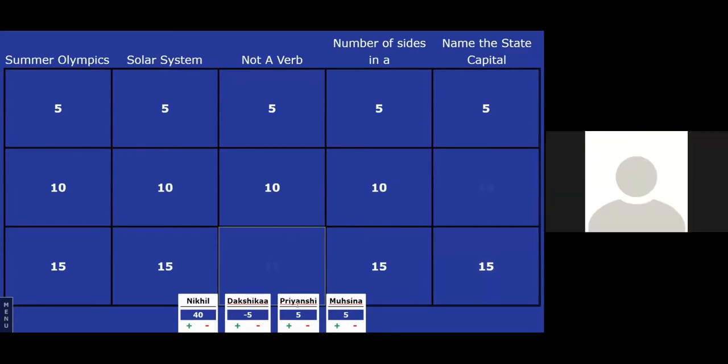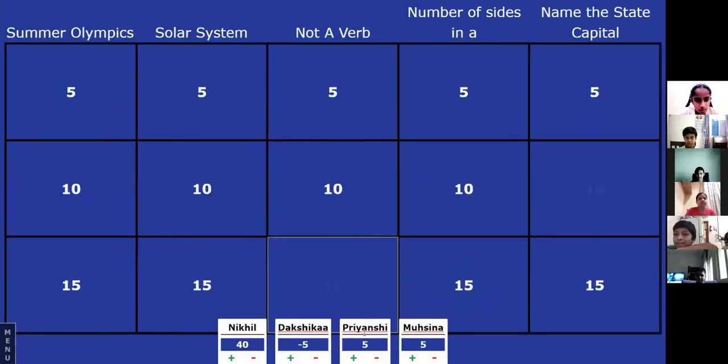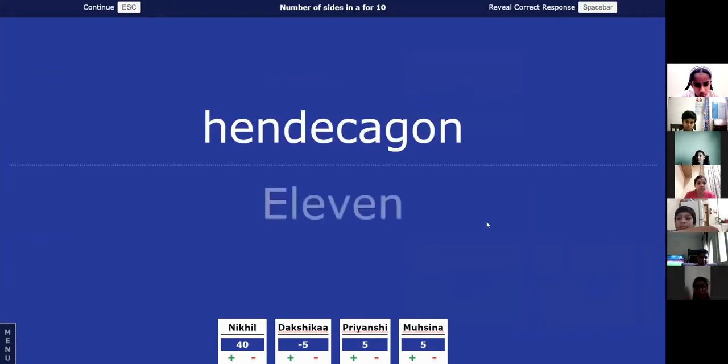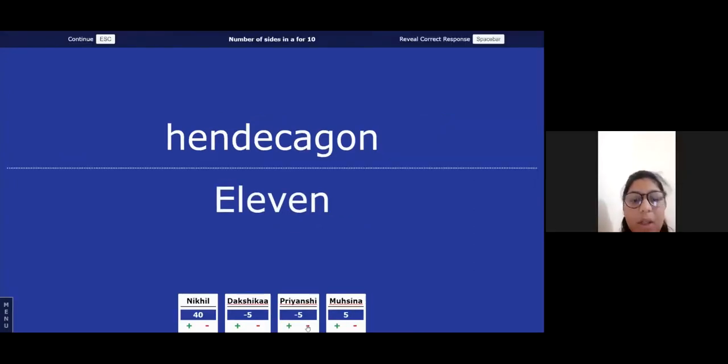Next, we move on to Priyanshi. Please make a selection. Sir, number of sides for 10 points. And here is your clue. 15? 15? 11. Yeah. You get five seconds. So, make use of the time.